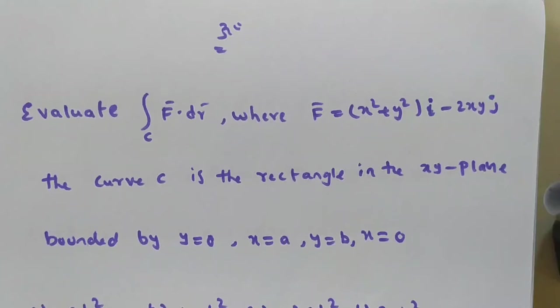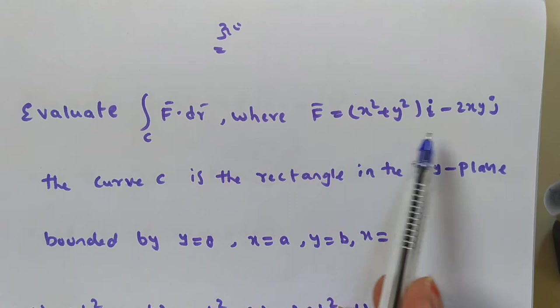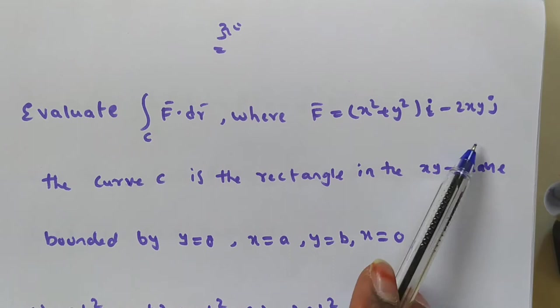Hi friends, in this video we are solving a problem on line integral. Before solving our problems, I am giving a task for you. The task is: evaluate the integral over C of F·dr, where F is equal to (X² + Y²)i minus 2XY·j — there is no K term, so the K coefficient is 0.